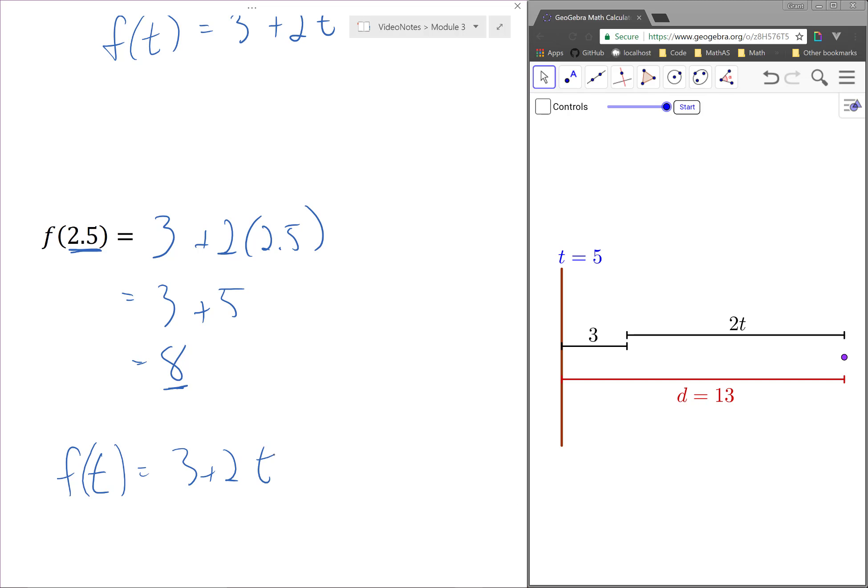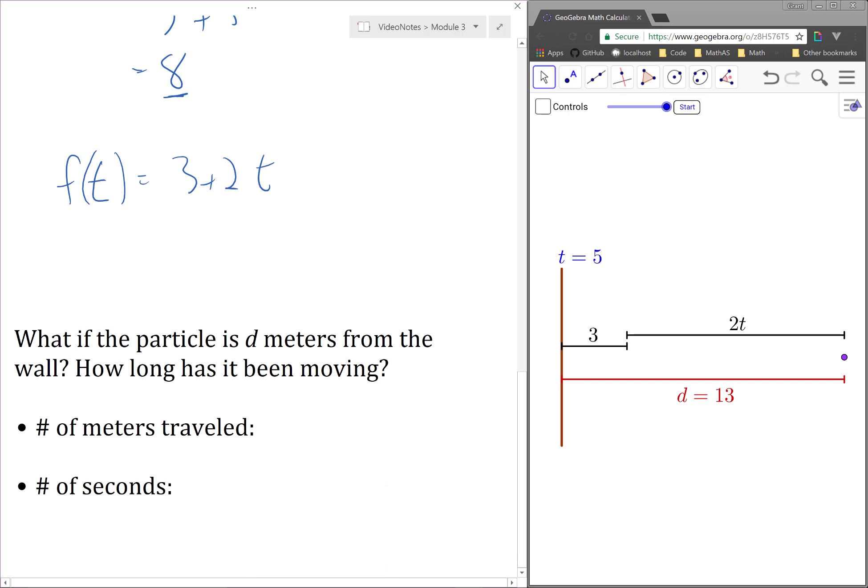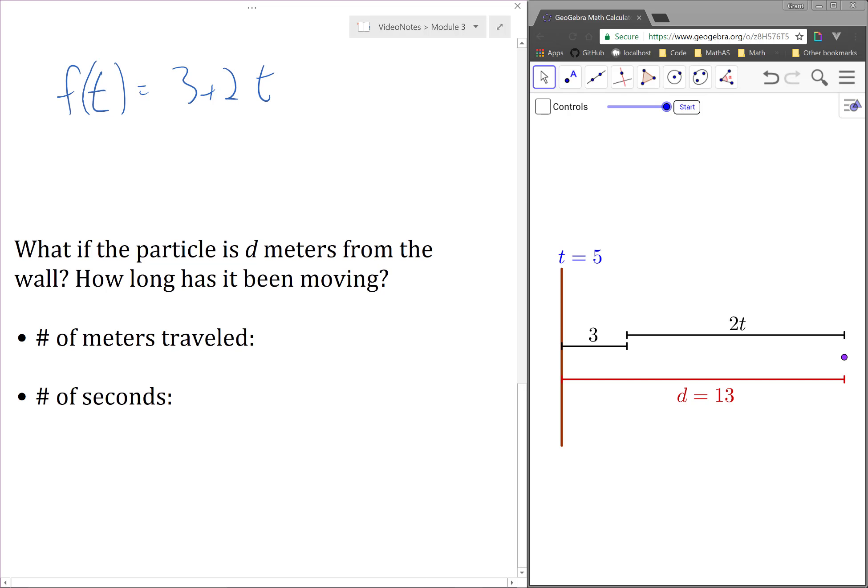What if we imagine reversing this process? So what if we know a value of d, so we know that the particle is d meters from the wall, can we find the corresponding value of t?